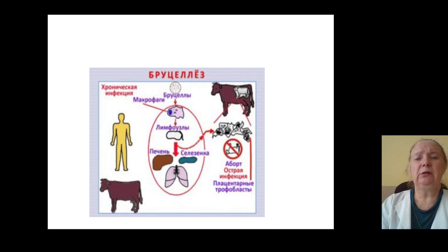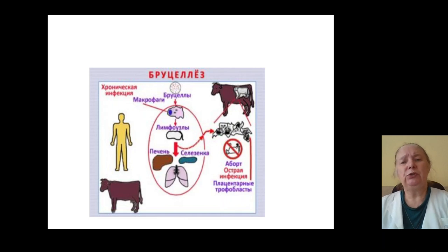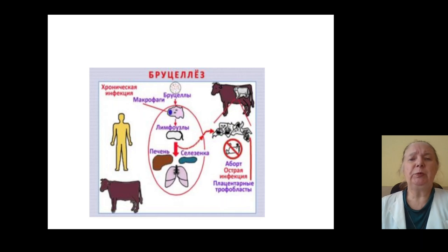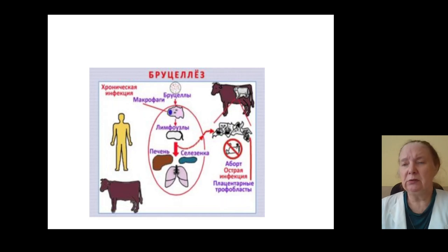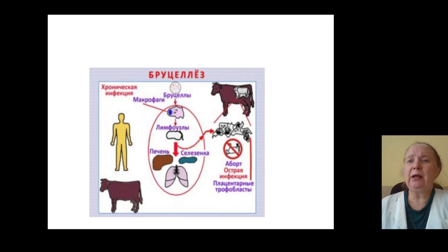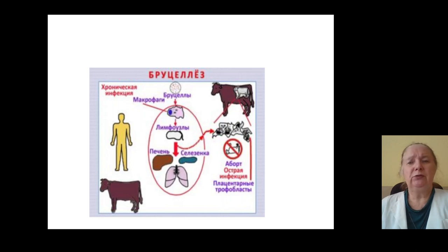From animals, Brucella penetrates to the organism of patients, penetrates to phagocytes and macrophages, then penetrates to lymphoid tissue and lymph nodes with formation of hyperplasia of lymphoid tissue. Then from lymph nodes, Brucella penetrates to blood and internal organs, then to connective tissue of internal organs, forming secondary foci of infection and infection granulomas.